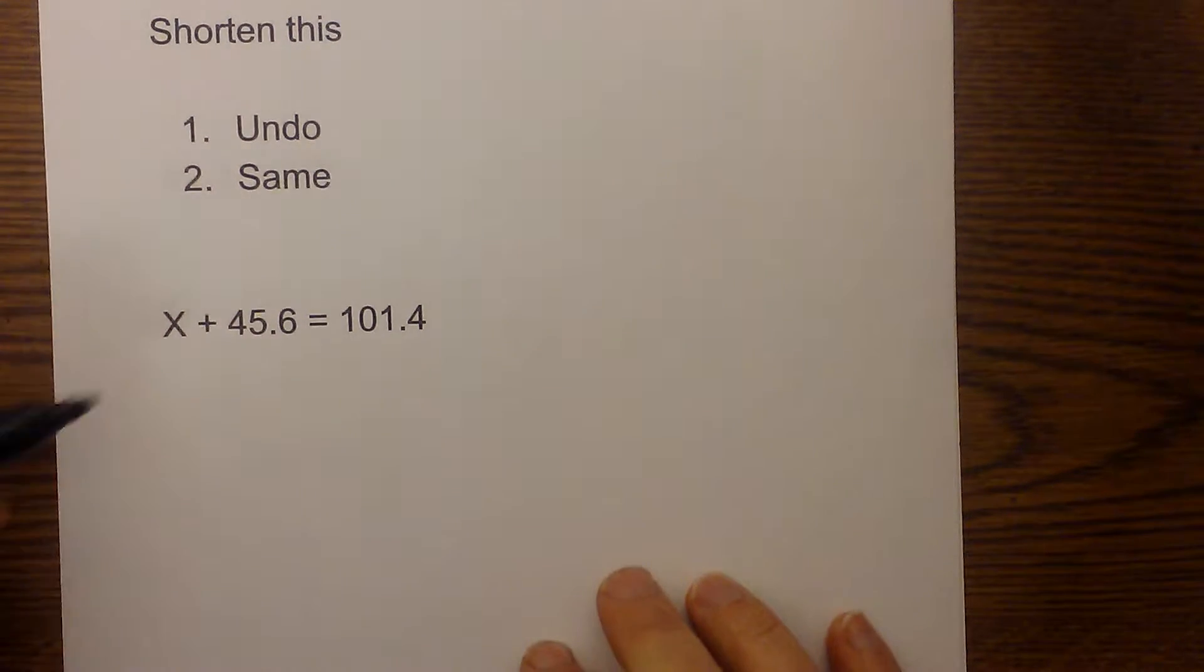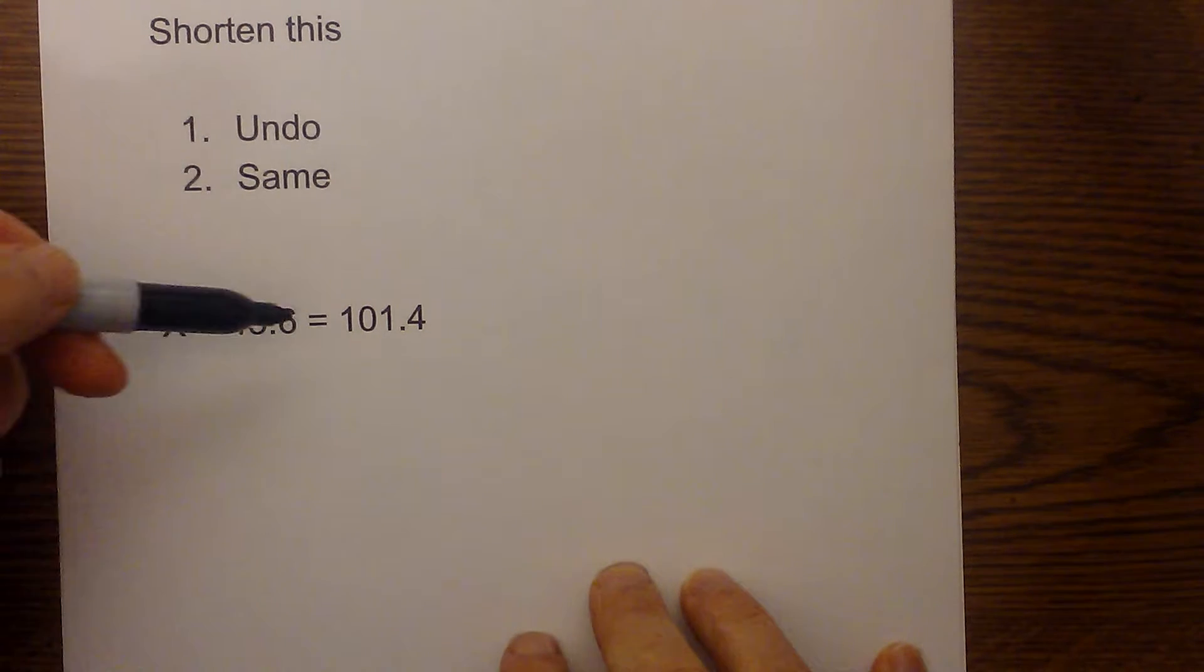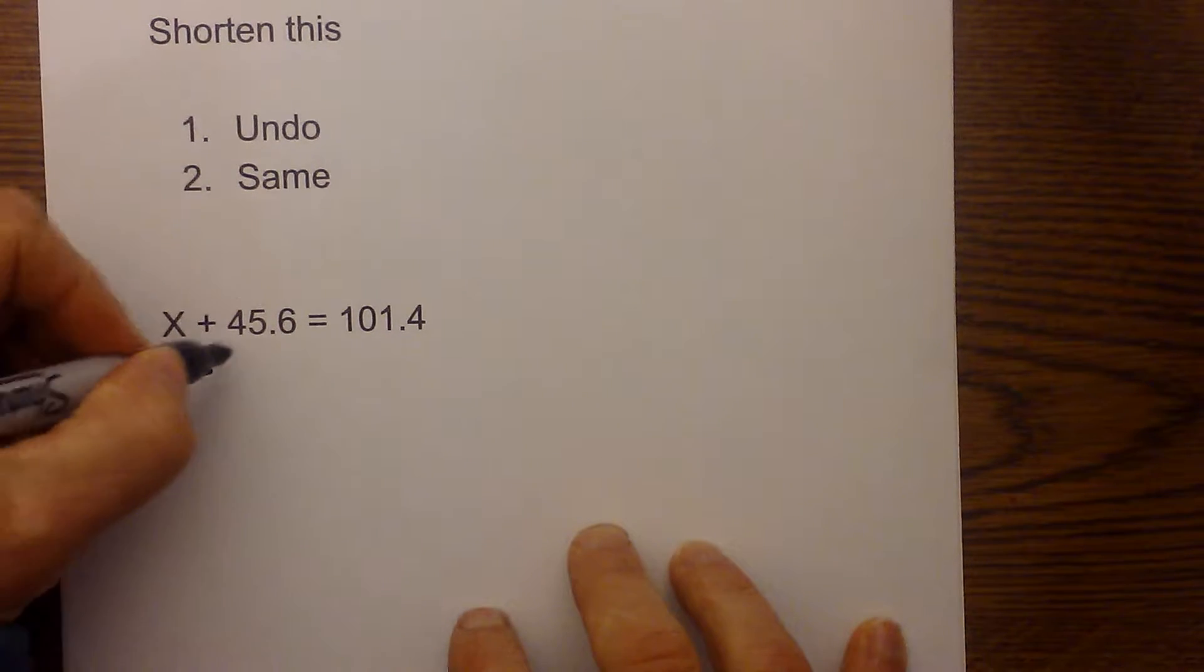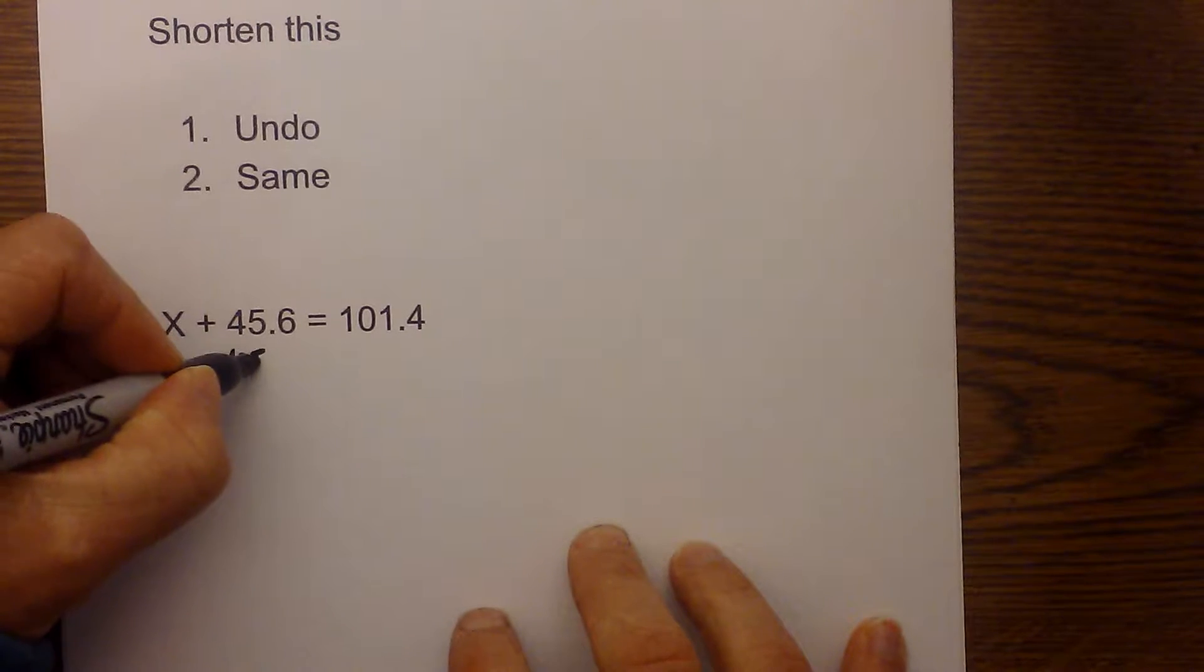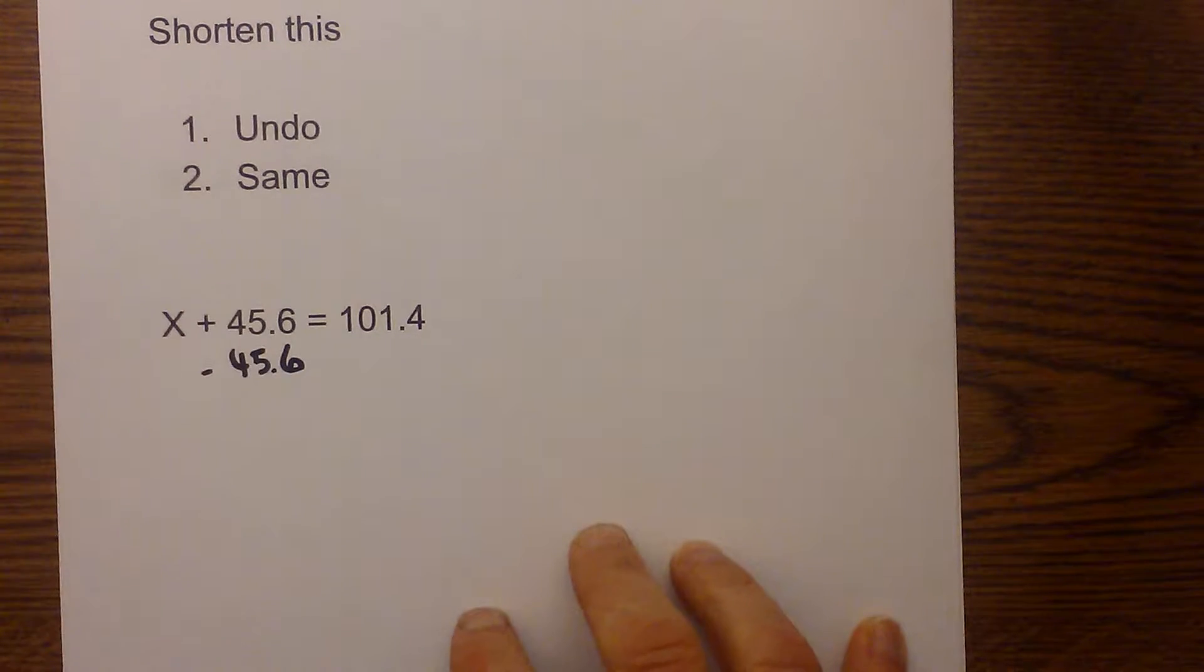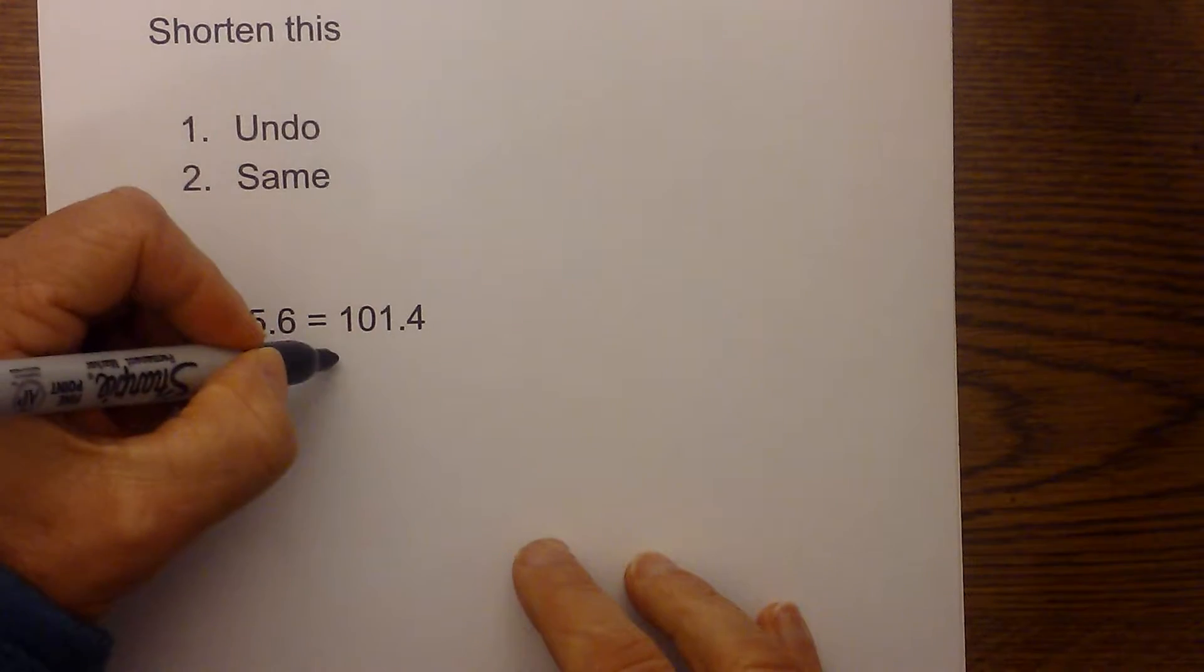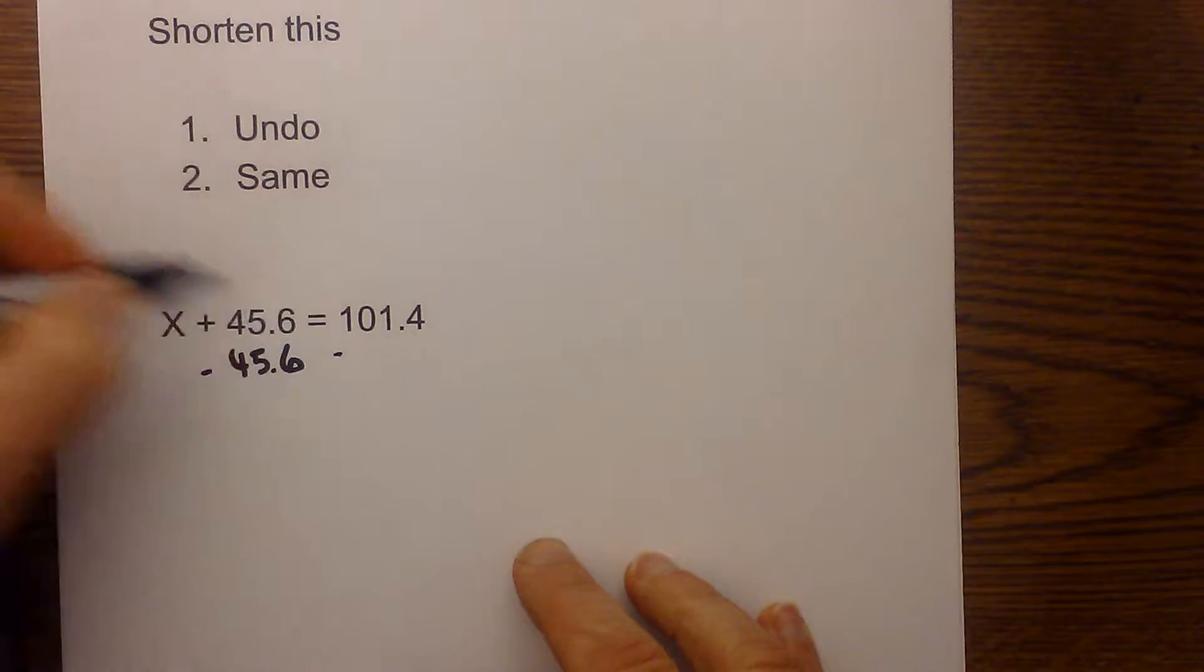So let's get started with this first one-step equation with decimals in it. And we have x plus 45.6 equals 101.4. Well the operation is addition so I am going to subtract 45.6. And what I do to one side I must do the same to the other so I will subtract 45.6.